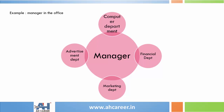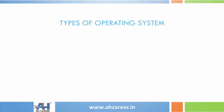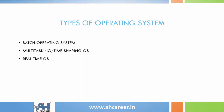Next, the types of operating system. The first one is batch operating system. Second is multi-tasking or time-sharing operating system. Third is real-time operating system. Fourth is distributed operating system. Fifth is network operating system, and sixth is mobile operating system.